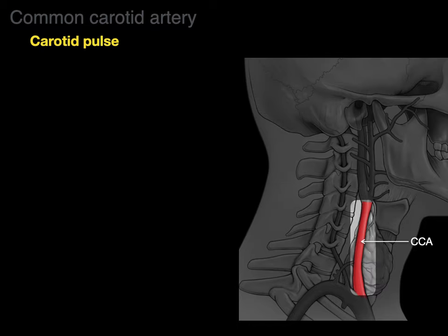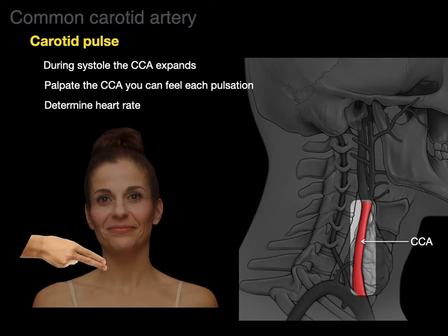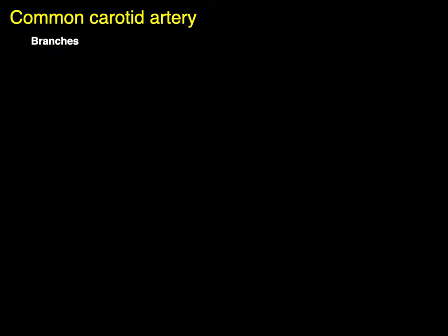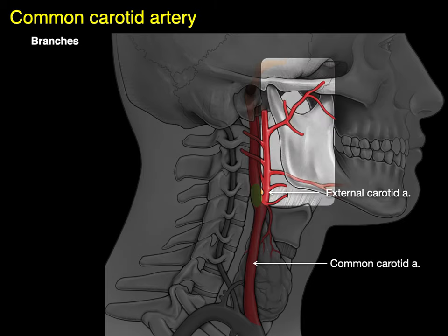The carotid artery gives rise to the carotid pulse, which occurs during systole when the left ventricle contracts, forcing blood into the common carotid artery, expanding it. Palpating the common carotid allows you to feel each pulsation and measure heart rate — by pressing the side of the neck near the laryngeal cartilage or Adam's apple. The term 'common' means to bifurcate; whenever you see 'common carotid,' 'common iliac,' or 'common hepatic,' it indicates a vessel that branches. 'Carotid' means sleep or stupor, because occluding both carotids reduces oxygen to the brain, causing fainting. The common carotid bifurcates into the internal and external carotid arteries.